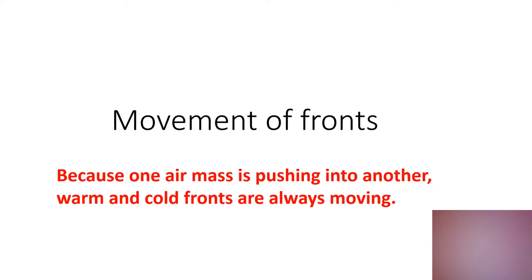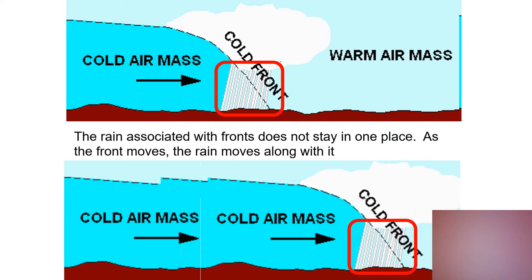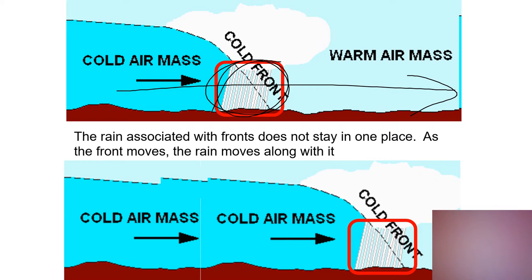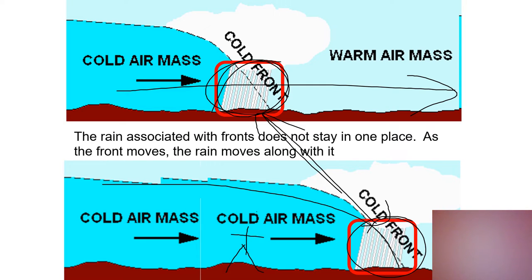Because one front is pushing into the other, something's always moving — that place where they meet is always changing. The cold air mass keeps pushing, so the front ends up moving from one location to another. If you were standing in the rain at the front's previous position, once the front has moved through, the rain is going to be farther down the road. Fronts move because one air mass is pushing the other, so the clouds and precipitation are going to be moving on down the road.